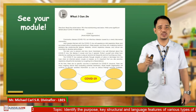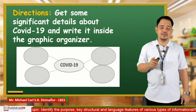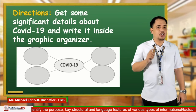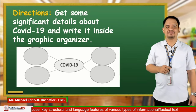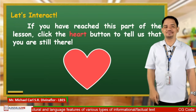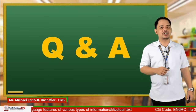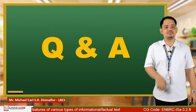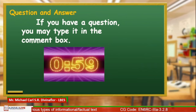Now for you to answer 'What I Can Do' in your module, you need to describe the characteristics or key details of COVID-19 from the text that you need to read. Get some significant details about COVID-19 and write them inside the graphic organizer provided. You don't need to write everything — just get some of the key details from the text and you're okay. If you have reached this part of the lesson, please press the heart button to let us know that you are still there. Congratulations! We are now on the part of the live stream where I will answer some of your questions. I'll give you one minute to type your questions in the comment box. Please do not ask questions that are not related to our topic today.